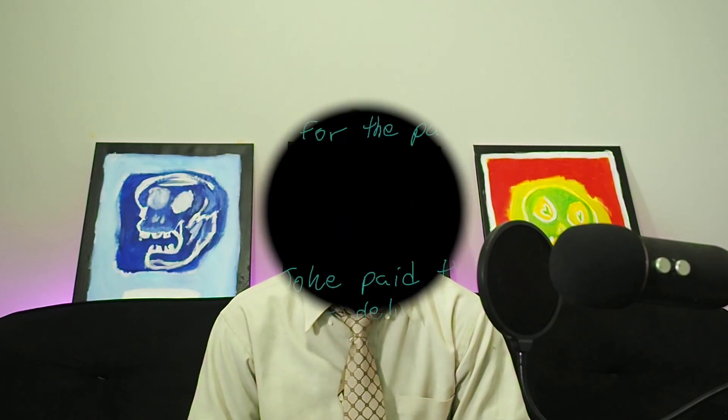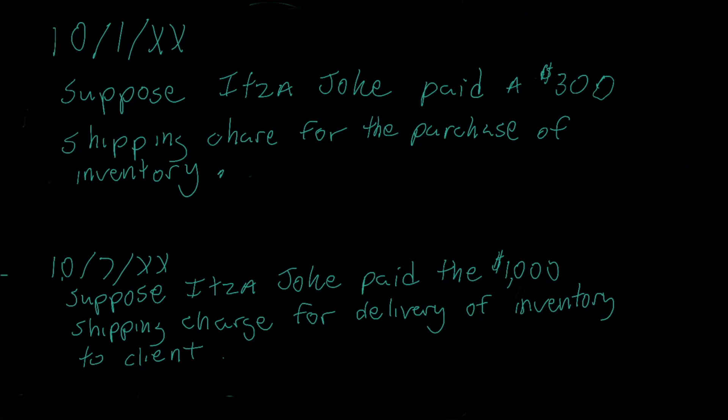So let's take a look at an example of how to address transportation costs and title of ownership. We have a following transaction that deals with shipping charges and we need to know how to properly record them. On October 1st, suppose that It's a Joke paid $300 shipping charge for the purchase of inventory. The key words are: paid shipping charge for inventory. So who paid the shipping charge? We did — we being It's a Joke. Since we paid the charges to get the goods to us from the purchase of inventory, we are considering this shipping charge to be freight in.